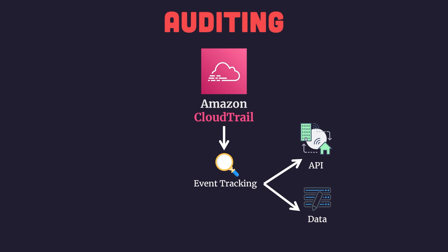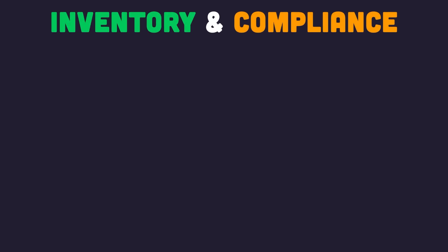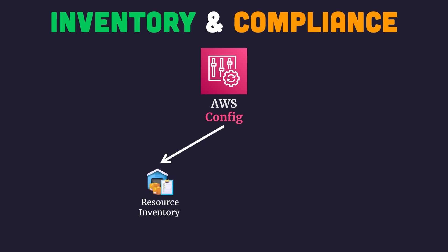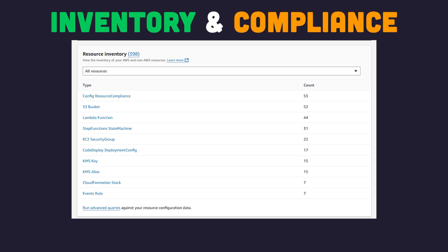In general, Amazon CloudTrail helps you answer who, what, and when. Our next service covers inventory and compliance, and the name of that service is AWS Config. AWS Config allows you to assess, audit, and evaluate the configuration of your AWS resources, and there are three useful components. The first is the resource inventories feature. Using this feature, you can very quickly and easily see a dashboard that shows you all the different resources in your AWS account and the quantities of each of them. This can be useful to identify lingering resources that are no longer used, or just to get a better idea of what's inside your account.